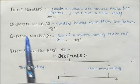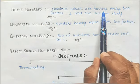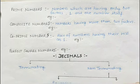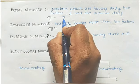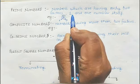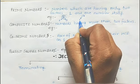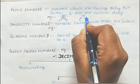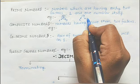Now coming to the next topic: prime numbers. The definition is numbers which have only two factors — 1 and the number itself. These kinds of numbers are known as prime numbers. For example, 5 has only two factors: 1 and 5. 17 is also having two factors: 1 and 17. All numbers which are having only two factors, 1 and the number itself, are known as prime numbers.